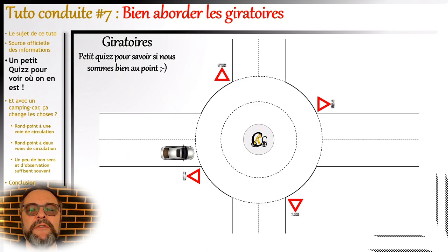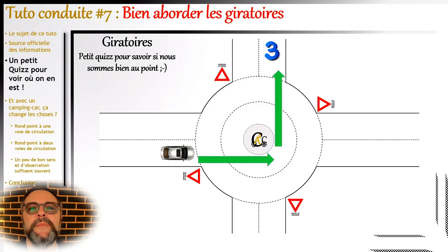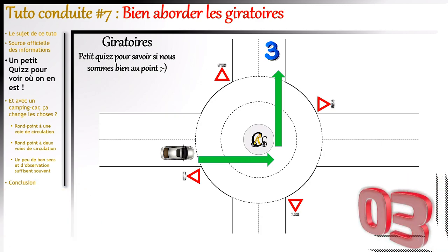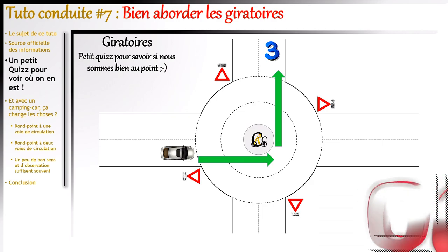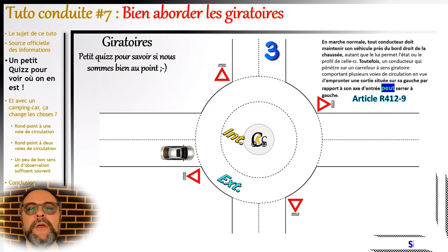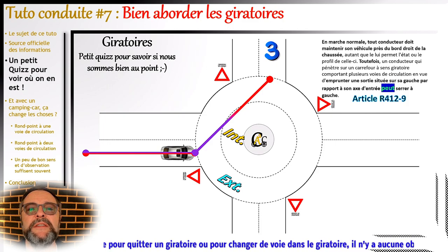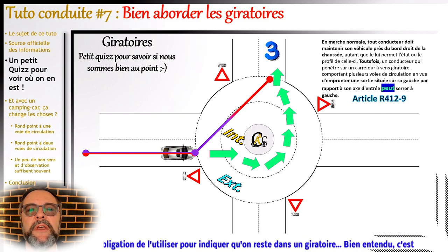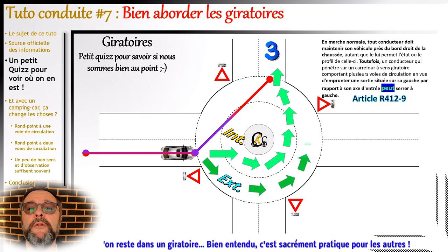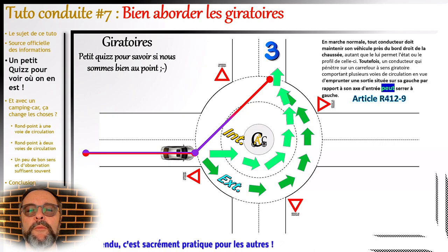Nouveau cas de figure : j'arrive en véhicule et je veux prendre la troisième sortie. Est-ce que je peux viser l'intérieur du giratoire, et est-ce que j'y suis obligé ? L'article 412-9 du code de la route est extrêmement clair : j'ai la possibilité de m'éloigner du bord droit de la chaussée puisque je vais emprunter une sortie située sur ma gauche par rapport à mon axe d'entrée. Je peux donc viser le centre du giratoire et me rabattre à partir de l'avant-dernière sortie. L'article dit « peut » et non pas « doit » — aucune obligation. On peut tout à fait faire le tour complet du giratoire.